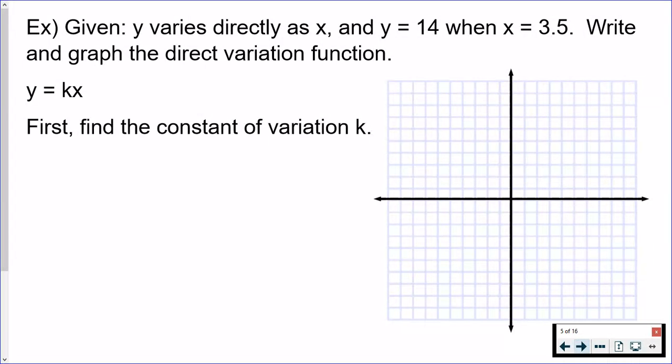If I know that y is 14 when x is 3.5, I'm going to replace them in the function and I'll have k left over to solve for. So plug in my values and now I'm going to solve for k. I do that by dividing by 3.5.